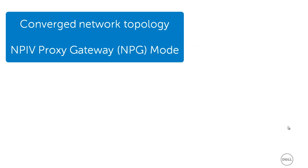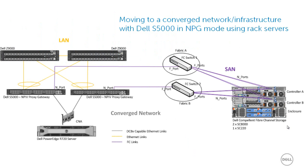Let's take a look at a converged network topology. This diagram demonstrates utilizing the S5000 in NP-IV proxy gateway mode with Dell PowerEdge rack servers. The LAN and FCoE traffic come up from the CNA to the Dell S5000 switch, which separates out the LAN and SAN traffic. In this mode, the S5000 never becomes part of the fiber channel fabric, and instead simply de-encapsulates the fiber channel from the FCoE and sends it to the back-end fiber channel switches — in this case, Brocade 6505 fiber channel switches — providing full fabric services such as name server and zoning.